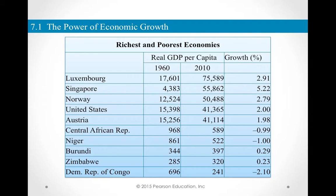Let's look at the richest and poorest economies in the world. As you may remember from our discussion about differences in aggregate incomes, Luxembourg is the richest country in the world. In 1960, its per capita real GDP was $17,601, and in 2010 it became $75,589. The implied growth rate was 2.91%.